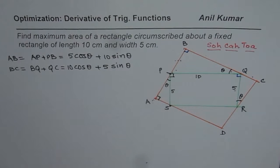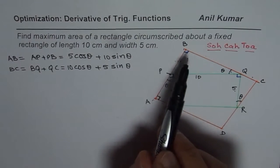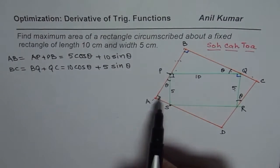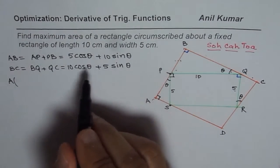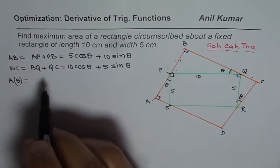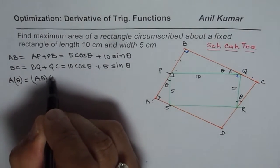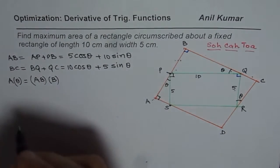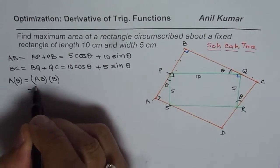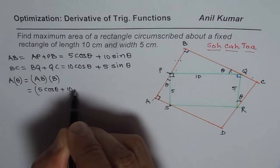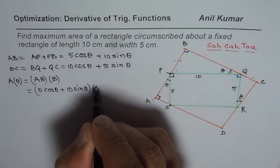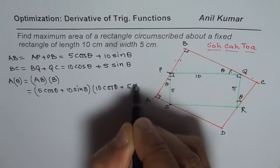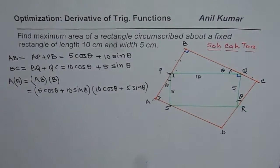These are a few tips which will be very good for you to do the rest of the exercises on trigonometric functions. Since we have these two sides of a rectangle, the area could be written as a function of theta, because both terms are functions of theta. It is the product of AB and BC. We multiply these two to get area. Purposely I have taken 10 and 5 so that our calculations become much simpler.